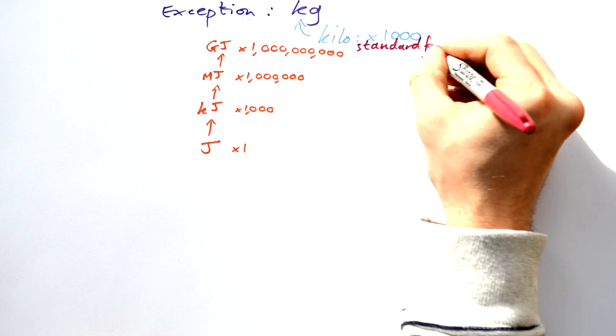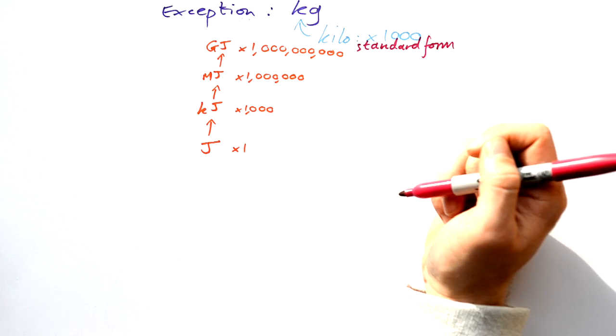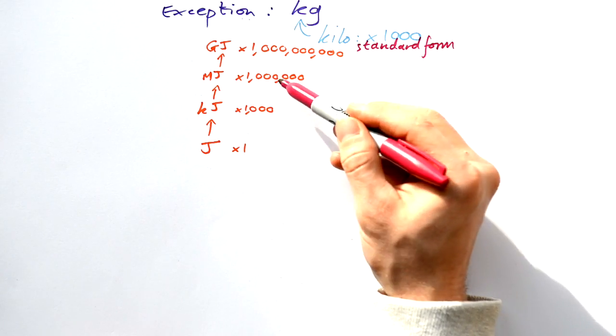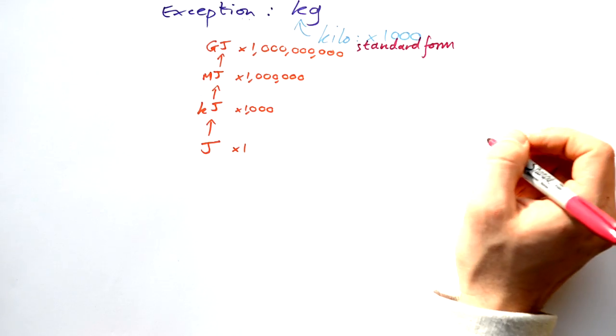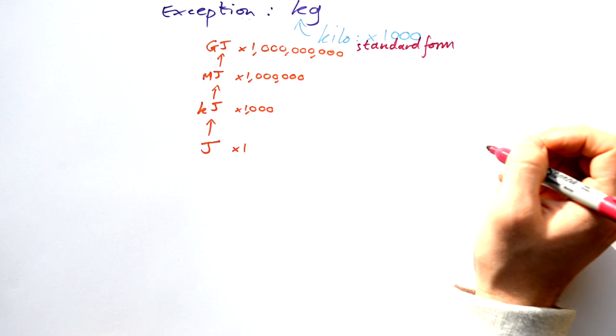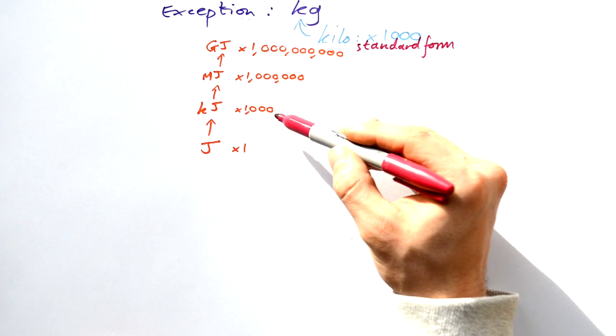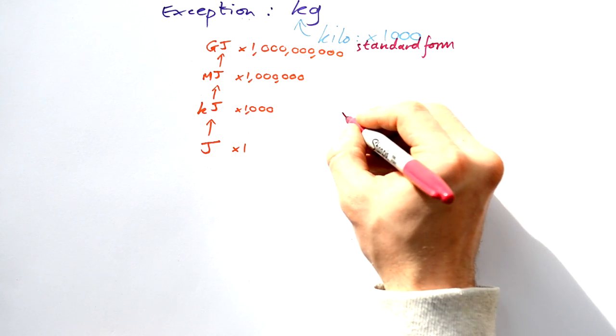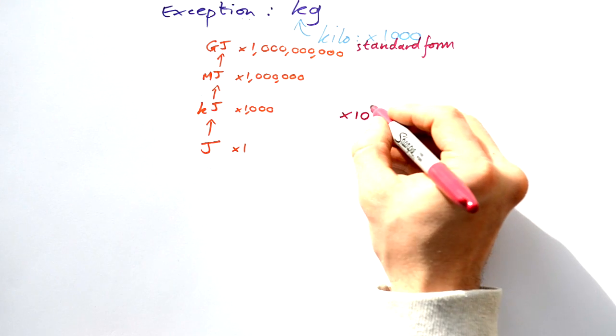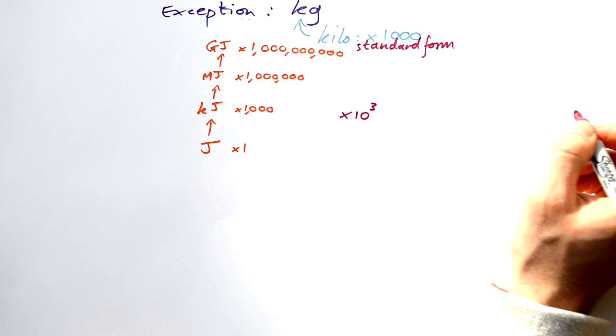Now we have an easier way of dealing with this, and that is called standard form. Instead of timesing by these massive numbers and trying to remember how many zeros we've got, all we do is times by 10 the right number of times. A thousand is 10 times 10 times 10 - in other words, it's 10 cubed, 10 to the power 3.